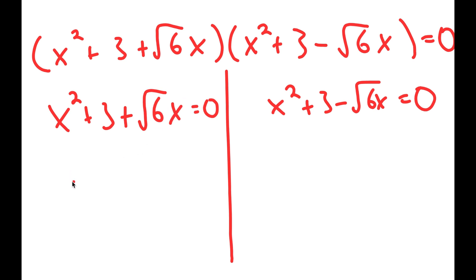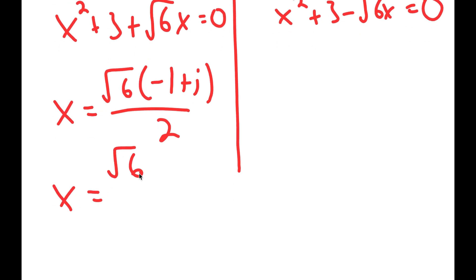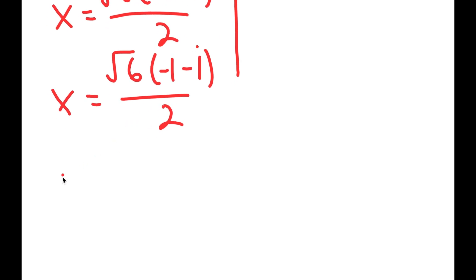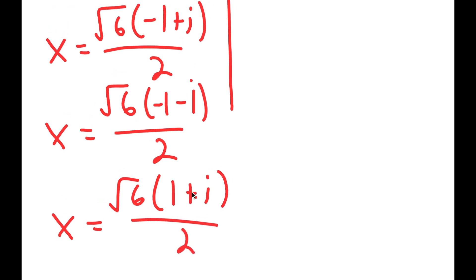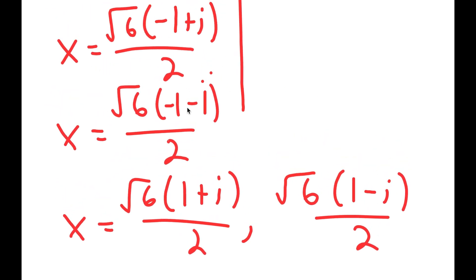You should get that x is equal to the square root of 6 times negative 1 plus i, over 2. And x is also equal to the square root of 6 times negative 1 minus i, over 2. Along with this, you should get x is equal to the square root of 6 times i plus 1, over 2. And x is equal to the square root of 6 times 1 minus i, over 2. So these are your four solutions.